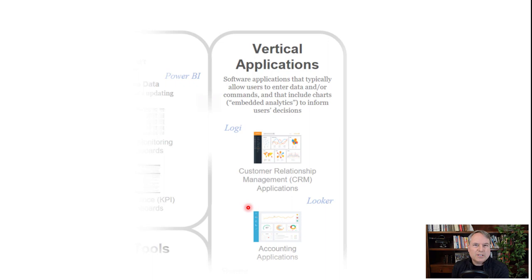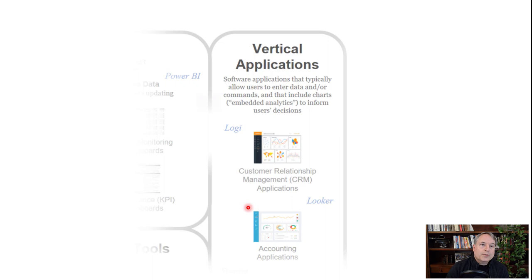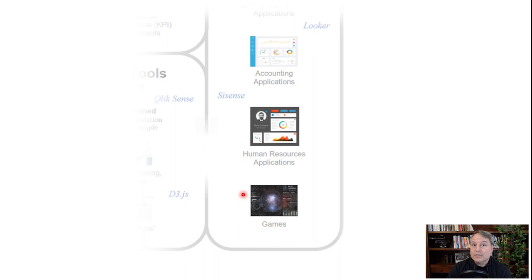Moving on to the next type of thing that can contain charts: what I call vertical applications. It's not a great term, but it's the best I could come up with. These are basically software applications that typically allow users to enter data and/or commands into the system. Typically with dashboards and reports, you can't actually enter information into them — they only display information back to users. But a lot of these software applications do contain charts so users can be better informed about what kind of information or commands they should be entering. We have things like customer relationship management systems, accounting applications, human resource management systems, and even games — a lot of games have charts in them. Companies like Looker and Sisense sell what they call embedded analytics, which makes it easier to add charts to these sector-specific applications.